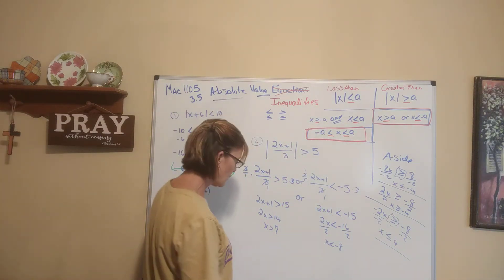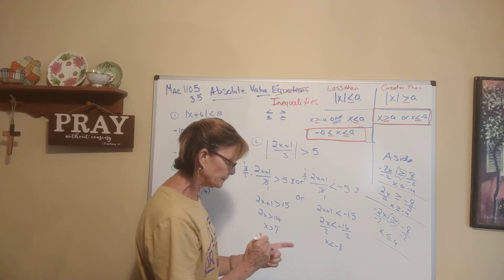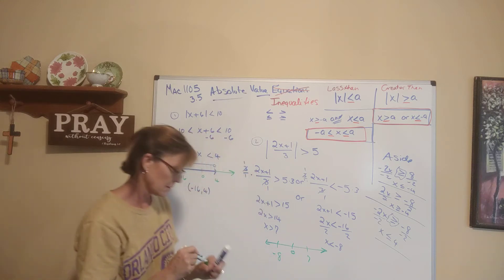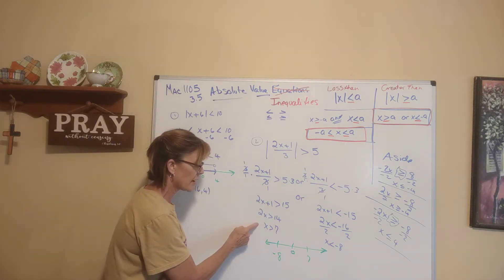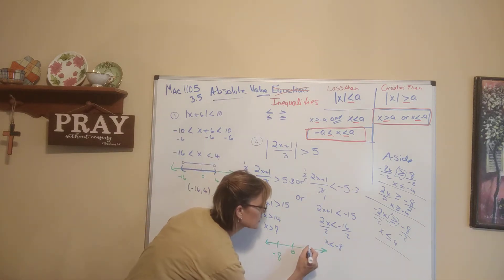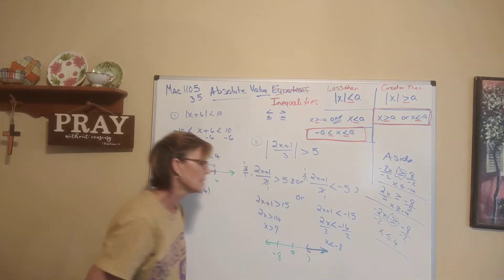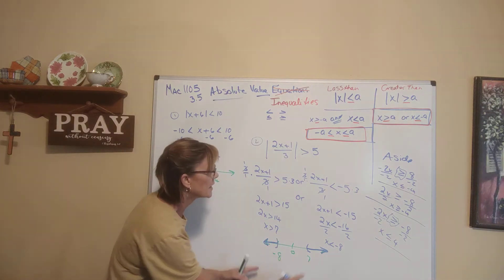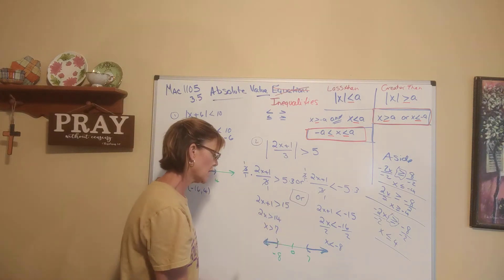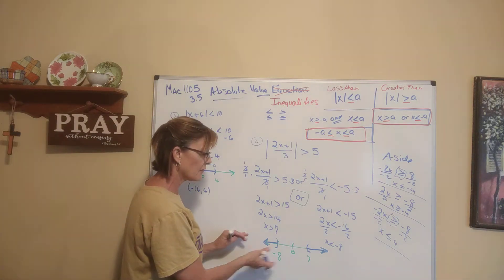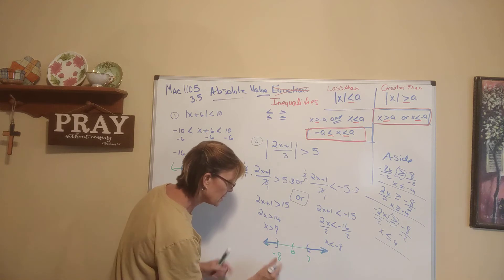We have to graph this. Here's my number line with 0, 7, and negative 8 marked. This is true when x is greater than 7 — parentheses and to the right — or less than negative 8 — parentheses and to the left. Because this is joined by an 'or,' I keep everything highlighted on my number line: all numbers to the left of negative 8 and all numbers to the right of 7.